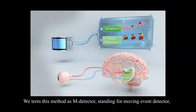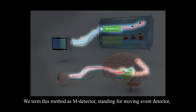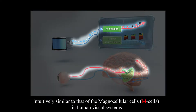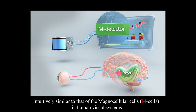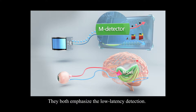We term this method as MDetector, standing for moving event detector, intuitively similar to that of the magnocellular cells, M-cells, in human visual systems. They both emphasize low-latency detection.